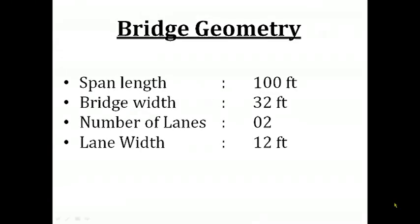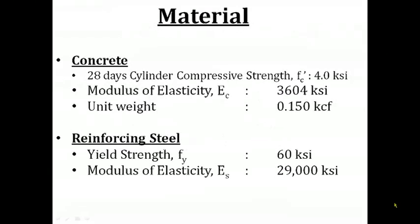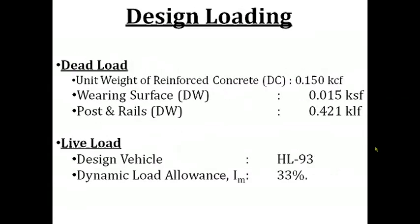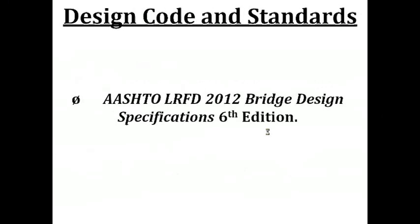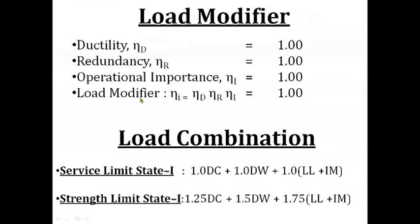Now let us see the design specifications. The base length is 100 feet, width 32 feet, two lengths each 12 feet. The concrete compressive strength FC prime is 4 KSI and the steel yield strength is 60 KSI. The code includes conventions DC and DW: DC stands for the dead load of structural components with unit weight of concrete 0.15 KCF. DW stands for the dead load of the wearing surface at 0.015 KSF and post and rails calculated at 0.421 KLF. We will use the design vehicle HL-93 with a dynamic load allowance of 33%. We will use the AASHTO LRFD 2012 bridge design specification 6th edition as our design code, with load modifier 1.